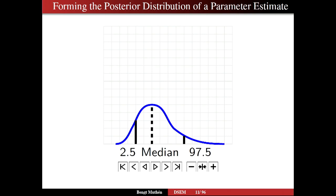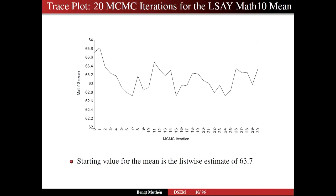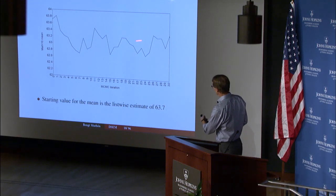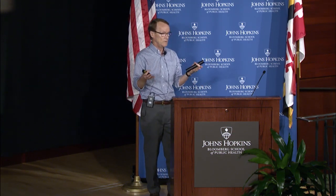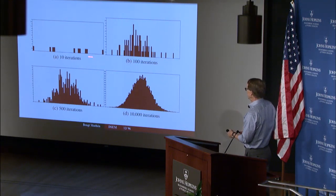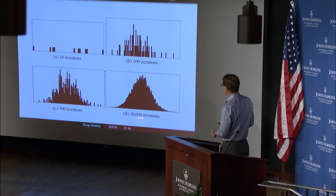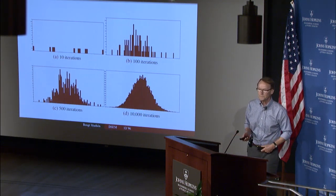So this becomes a distribution if we go far enough. We throw away an initial period of draws that are too far from being stabilized — called the burn-in phase — which is the first half of the iterations. We work with two chains — two different processes going forward in parallel, computed on different processors. We throw away the first half of both chains. After 10 iterations it doesn't look like much, but after 100 you start discerning a normal distribution, after 500 it's getting better, and after 10,000 you have a very nicely smooth normal distribution for the mean under missing data.